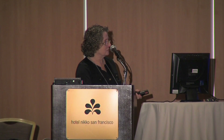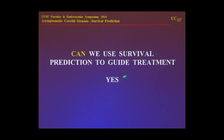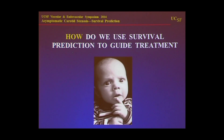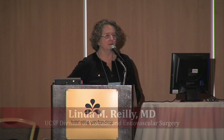Going back to our case patient and applying the three different groups' approaches to estimating risk: from the first study, the patient's score is 15, survival is 34% — probably no. From Wallert, they're in the medium-risk group with 80% survival — yes. From Alcacer et al., their score is 3, which is greater than 2, survival is 70% — maybe. Can we use survival prediction to guide treatment? Yes, we can. Should we use it? Yes, we should, and everybody in this room does to some degree. But how do we use it? There's no magic formula. If we don't figure out how to do it with some precision, someone else will figure it out for us — and it probably will be even worse. Thank you very much.